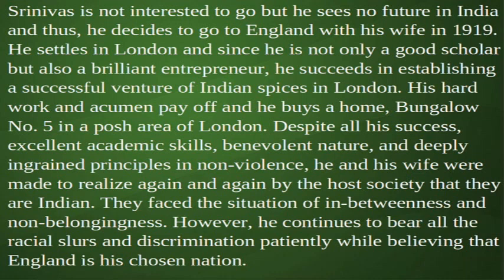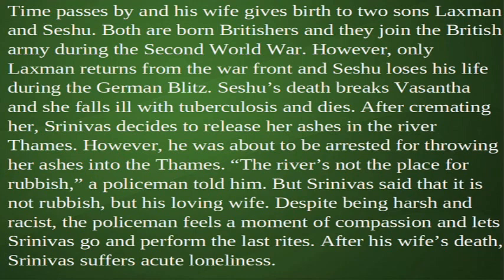His hard work and acumen pay off and he buys a home, Bangla No. 5, in a posh area of London. Despite all his success, excellent academic skills, benevolent nature and deeply ingrained principles in non-violence, he and his wife were made to realize again and again by the host society that they are Indian. They face the situation of in-betweenness and non-belongingness. However, he continues to bear all the racial slurs and discrimination patiently while believing that England is his chosen nation. Time passes by and his wife gives birth to two sons, Lakshman and Sheshu. Both are born Britishers and they join the British army during the Second World War. However, only Lakshman returns from the war front and Sheshu loses his life during the German Blitz.